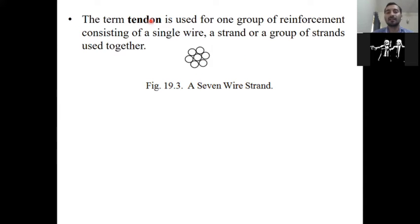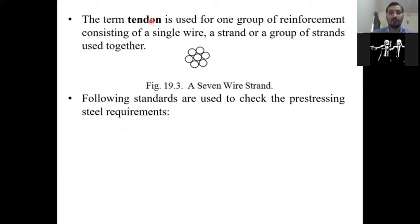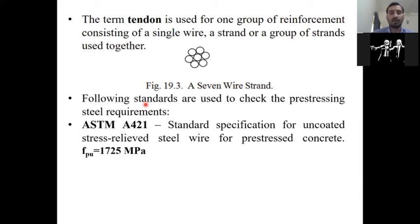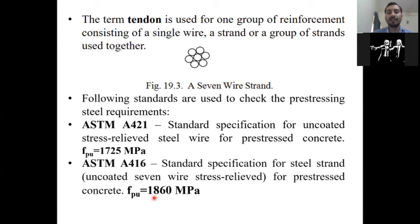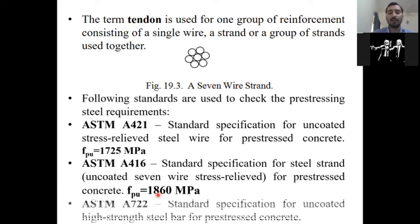And if you want to use standards, normally we will be using two types of grade. The first grade is 1725 MPa — we say grade 1725, meaning the strength of this steel is 1725 MPa. If you want to use this grade, you can refer to ASTM A421. The second grade, which we normally use in our design, is 1860 MPa. And if you want to use other steel bars, you can refer to ASTM A722.